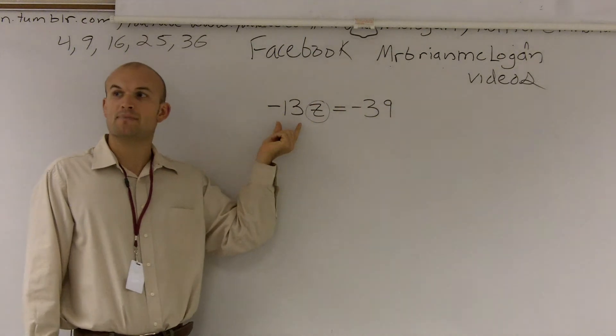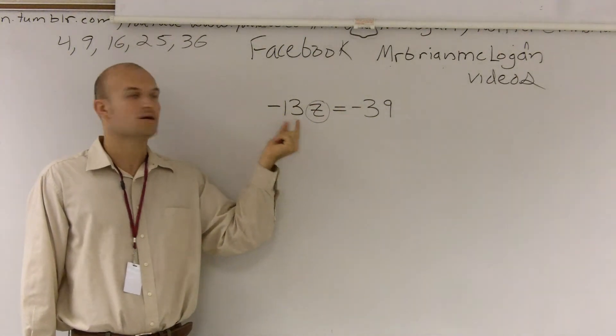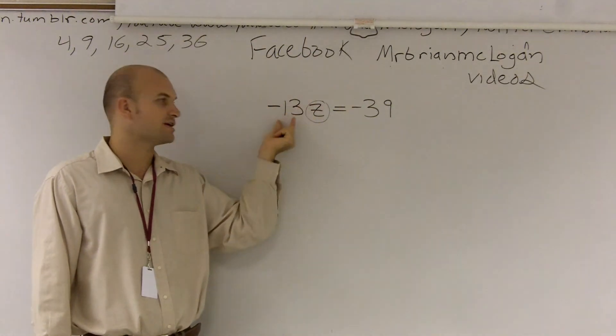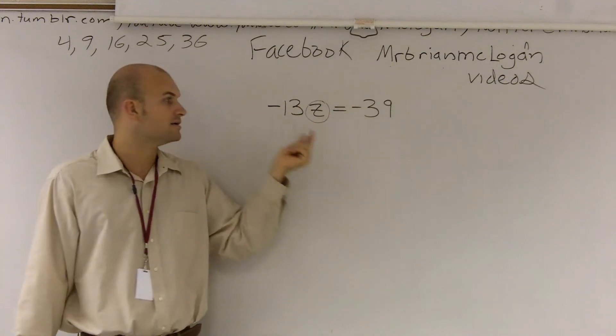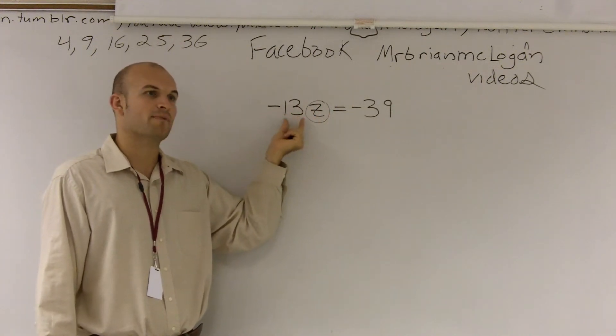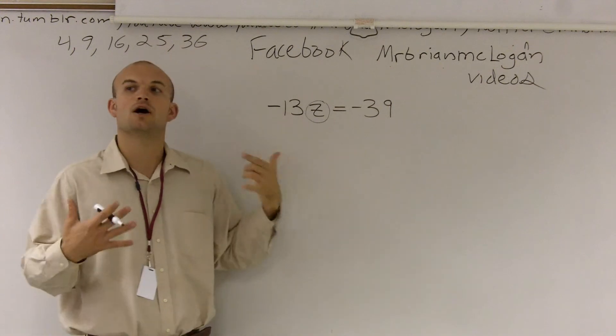Well, this z is being multiplied by a negative 13. We usually don't write the multiplication sign in there. When it's just a number and a variable, we know multiplication is going on. So this variable is being multiplied by negative 13. So we need to undo that.